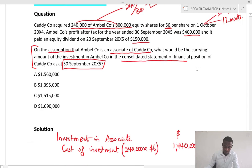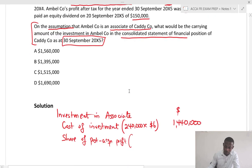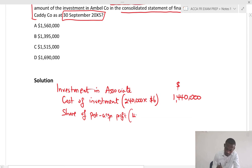Let's break it down. We need the share of post-acquisition profit. The profit was $400,000 times 30% and it's a full year. So 400,000 times 0.3, and that will give us $120,000.